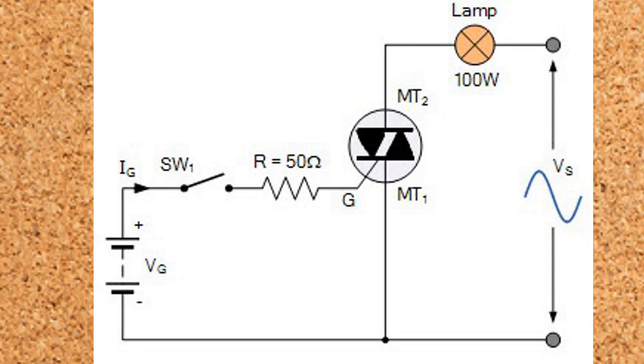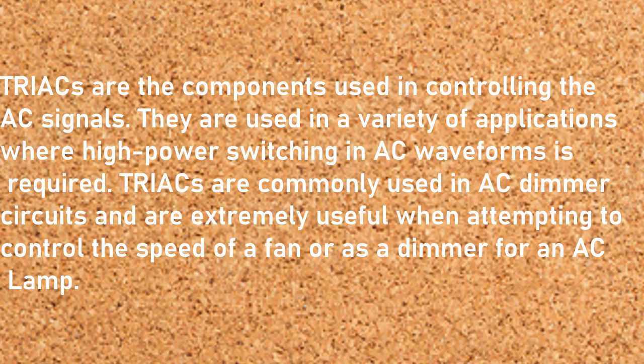As long as the switch is closed, the instantaneous power supply voltage and load current decrease to zero, and it will relatch by using the opposite thyristor. A TRIAC is the component used in controlling AC signals. They are used in a variety of applications where high power switching in AC waveforms is required. A TRIAC is commonly used in AC dimmer circuits and is extremely useful when attempting to control the speed of a fan or as a dimmer for an AC lamp.